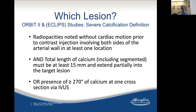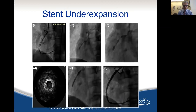Which lesions should we apply orbital atherectomy to? Obviously, calcified lesions. These are the inclusion criteria in the ORBIT-2 clinical trial and Eclipse trial, which we just finished and have published. We are looking forward to the results of the Eclipse trial. Radiopacity on both sides of the vessel is shown before contrast injection, and the length of the calcium on fluoroscopy should be 15 mm, or by intravascular imaging if you have a 270-degree arc.